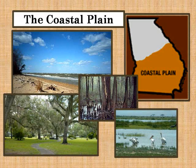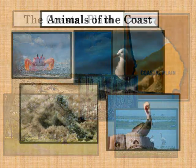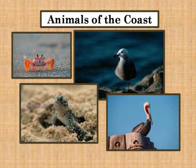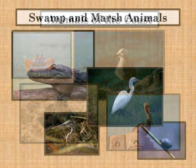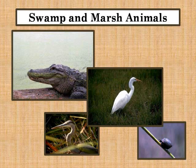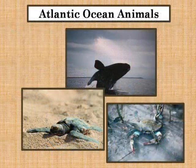Cypress trees and tupelo trees grow in the swamps. The animals of the coast include ghost crabs, gulls, sea turtles, and pelicans.